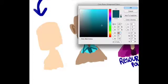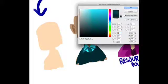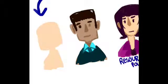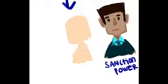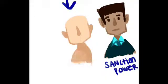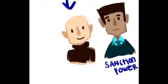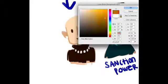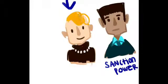Here we have the assistant principal who is a source of sanction power. Sanction power comes from having the ability to keep others from meeting their needs, which an assistant principal can do through disciplining students by giving them detentions or suspensions.